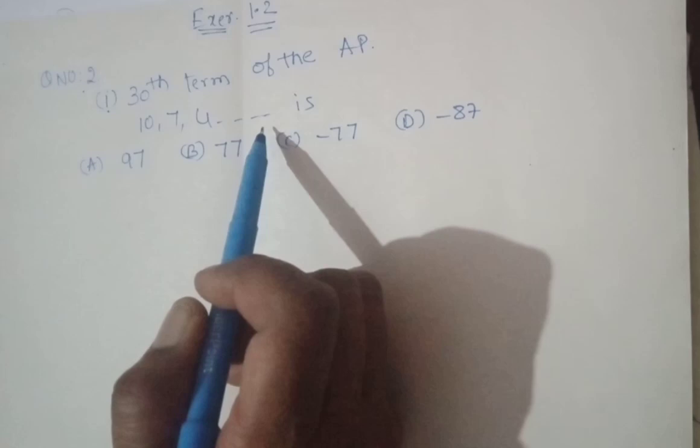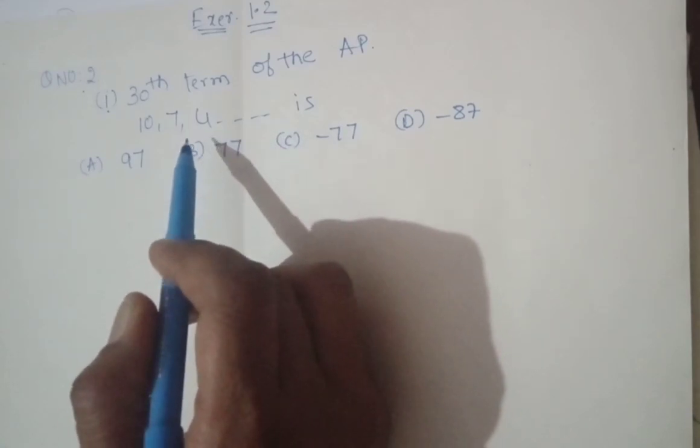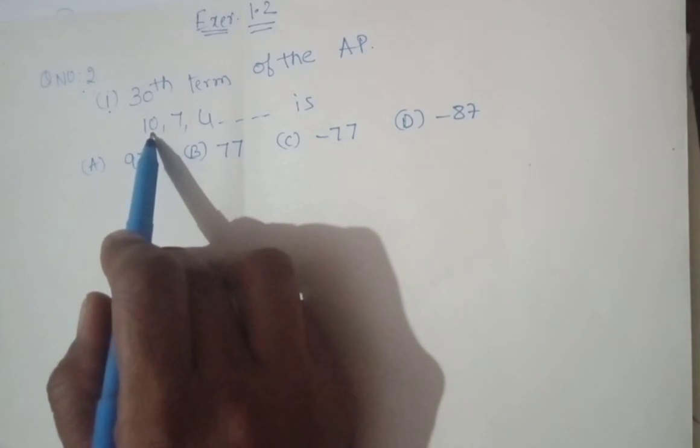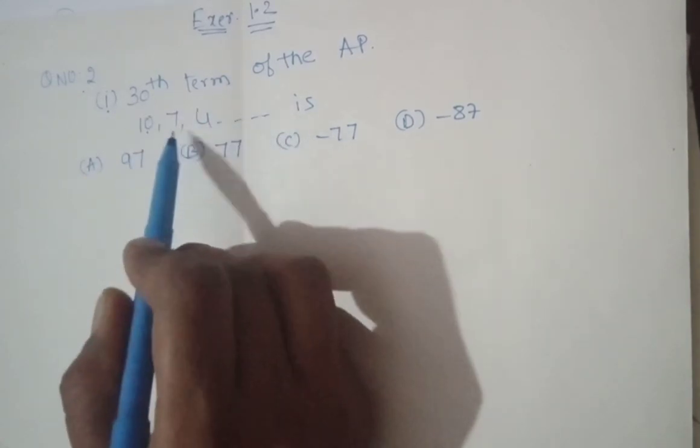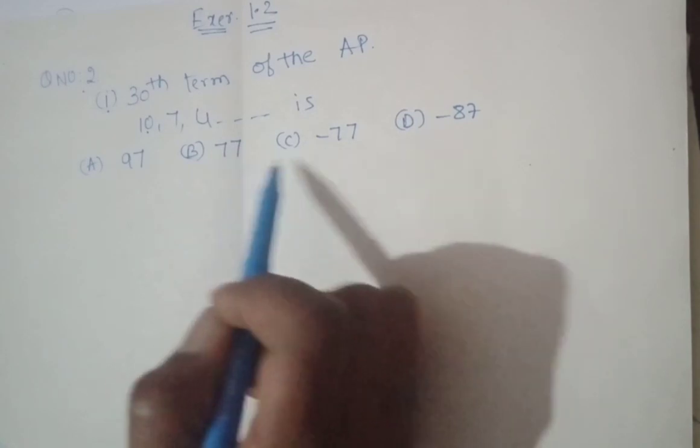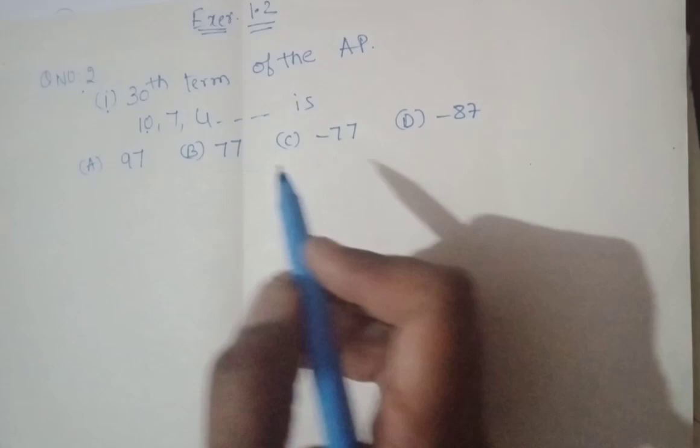The AP is given, so it's not necessary to check the difference. What you're doing here is taking the first term, and the 30th term means n equals 30. Then you'll find the correct option. Very simple - it's indirectly asking you to find the 30th term, a_30.